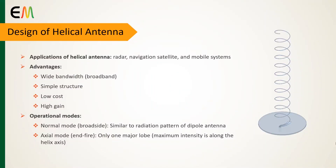A helical antenna is categorized as a broadband antenna. As a circularly polarized antenna, it is widely used in radar, navigation, satellite, and mobile systems due to its simple structure, wide bandwidth, low cost, and high gain. The helical antenna can operate in many modes; however, the two principal ones are the normal and the axial modes.